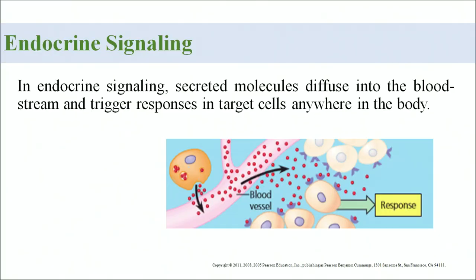In endocrine signaling, secreted molecules diffuse into the bloodstream and trigger a response in the target cells wherever those target cells are present in the body. The hormone directly affects its target organ.